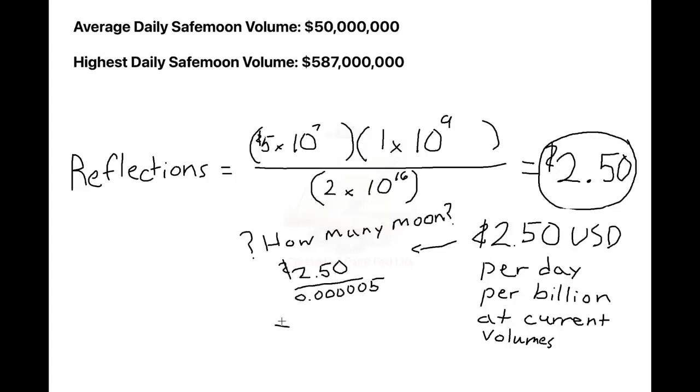At the time of writing, it's five zeros with a five at the end. And our $2.50 is 500,000 SafeMoon, or half a million SafeMoon. So if you have a billion SafeMoon, and the daily volume is $50 million, you should expect to see 500,000 SafeMoon at this current price, which is about right.